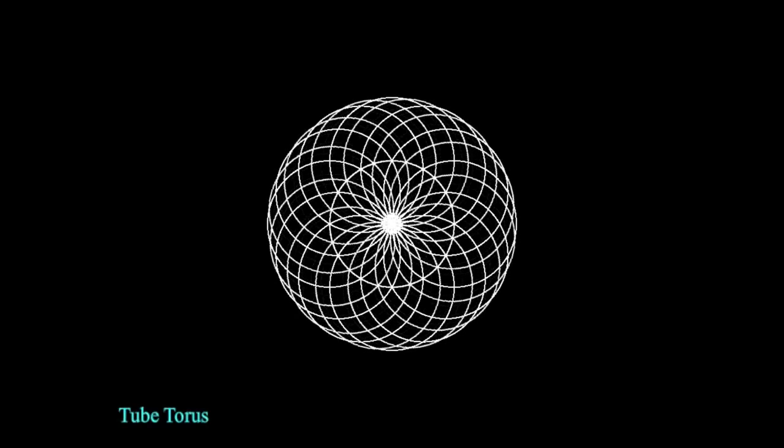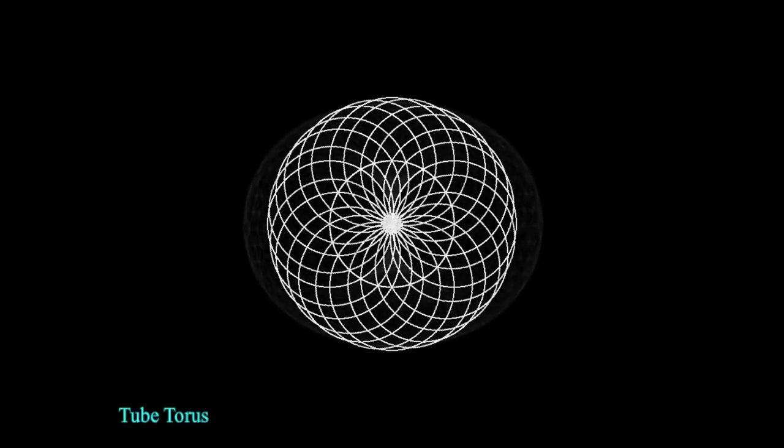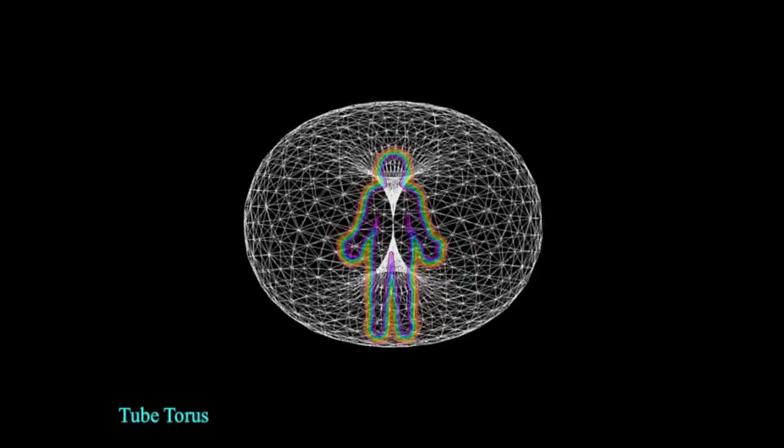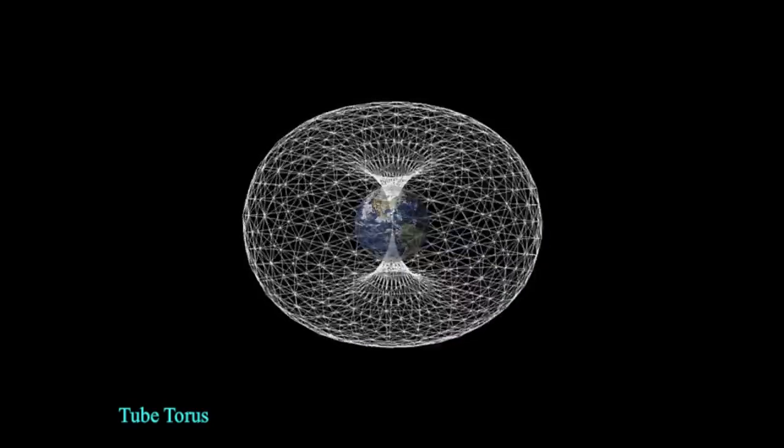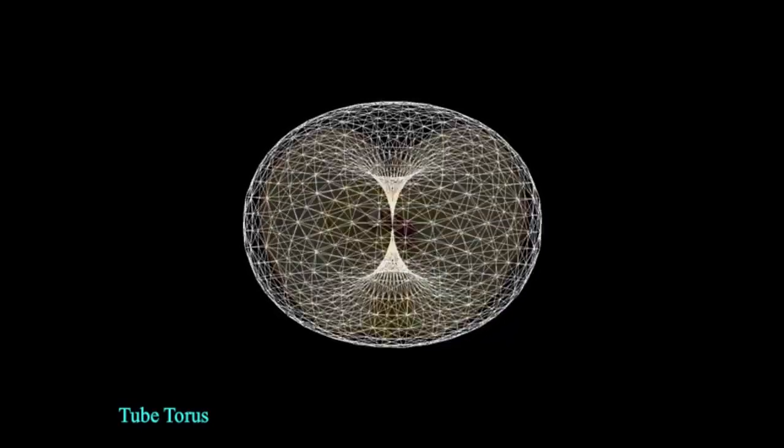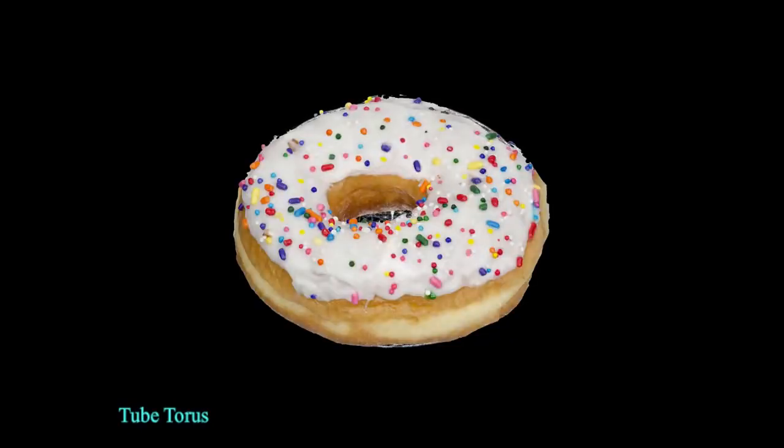The tube torus can be seen as one of the most foundational shapes in existence. It is found everywhere, it's all through nature. It is the shape of the electromagnetic field of the body or the magnetic field of the earth. Cut open an apple and you'll see the same shape. It's everywhere when you start looking for it. It's even in your box of donuts.